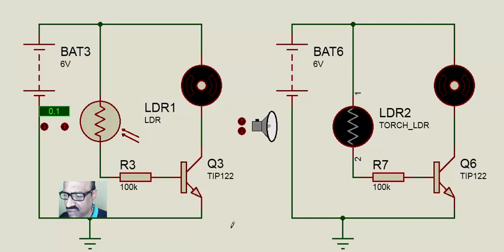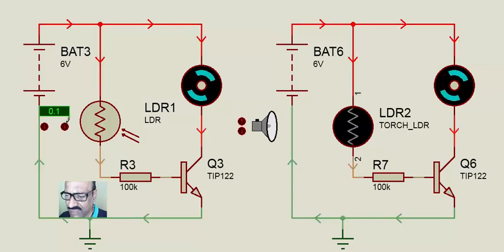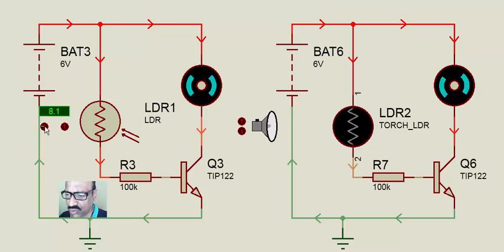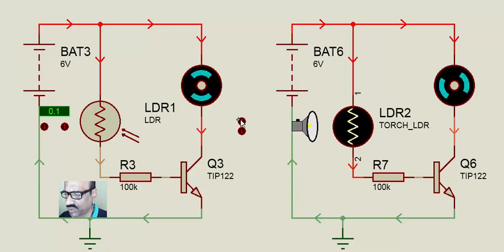Having understood that, let us see what happens if we use an LDR — a light-dependent resistor — in place of the resistor. The LDR's resistance falls when light falls on it. When we increase the intensity of light, the current flows and the motor works. If we reduce the intensity, the motor speed comes down because sufficient current does not flow. When we bring a torch close to the LDR, the motor rotates at higher speed. This is how the function is achieved using an LDR.